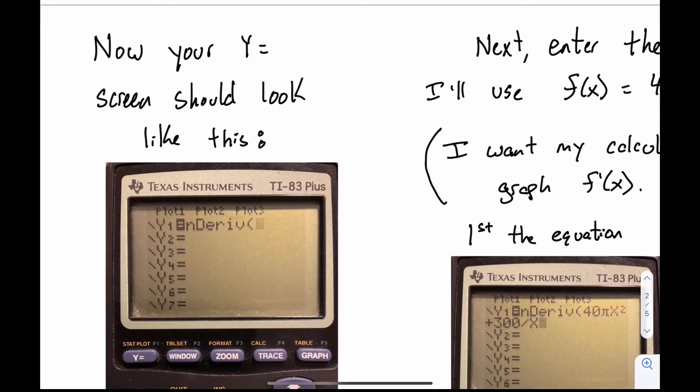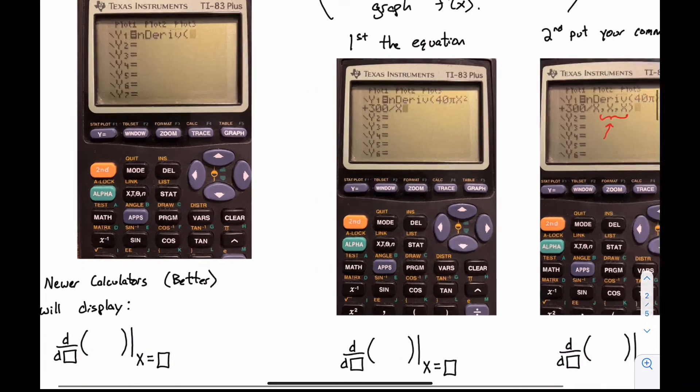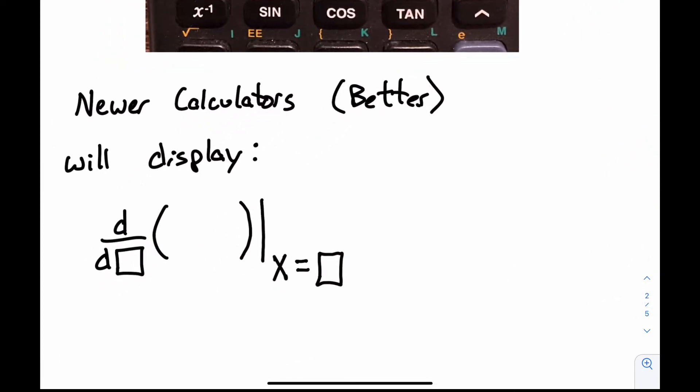So your Y equals screen should look like this. Now, if it doesn't look like that, it's probably because you have a newer calculator, which is awesome. Good for you. I have an old one. And so the newer calculators will display something like this. And so what the calculator is going to be looking for is for you to fill in those boxes, and the function itself that you have will end up being plugged in there. So you'll plug in the function, whatever it is there.